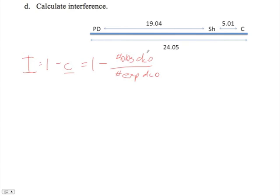We read this directly from the data. The observed is equal to 3, and the expected double crossovers is the product rule.